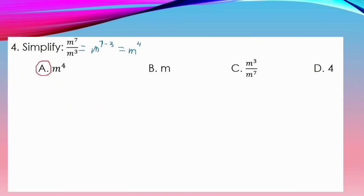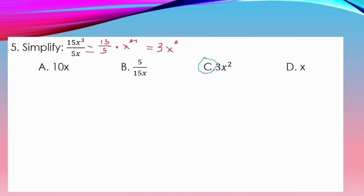For number 4: Simplify m to the power of 7 over m to the power of 3. The correct answer is m to the power of 4. We have m to the power of 7 minus 3, which equals m to the power of 4. For number 5: The correct answer is 3x squared. We separate the coefficient: 15 divided by 5 times x to the power of 3 minus 1. Remember, a variable with no written power automatically has an exponent of positive 1. Final answer: 3x squared.